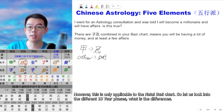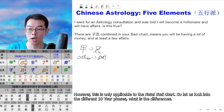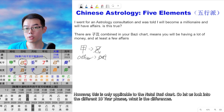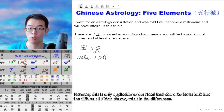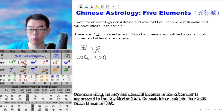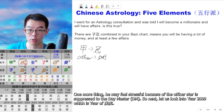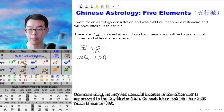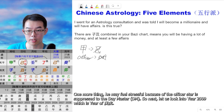However, this is only applicable to the natal Ba Zi chart. He may also feel stressed because the officer star is suppressed to the day master. So let us look into the different ten-year phases and what the differences are.